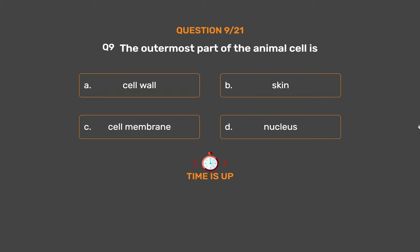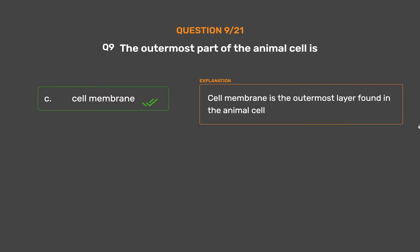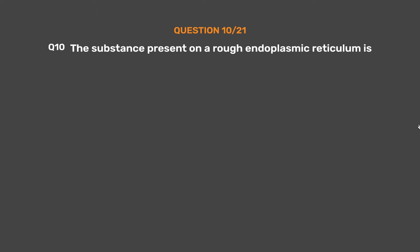The correct answer is Option C: Cell membrane. Cell membrane is the outermost layer found in the animal cell.